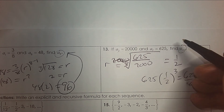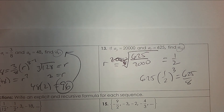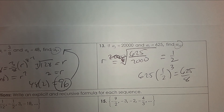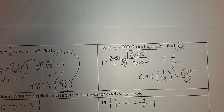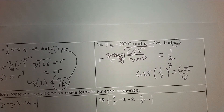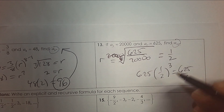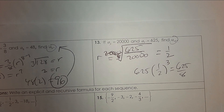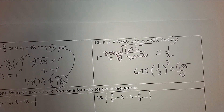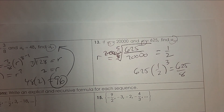Wait — I used the wrong number. It's 7 take away 2, so it's the 5th root of 625 over 20,000 that equals R. There we go — so it's the 5th root, and that's your answer.